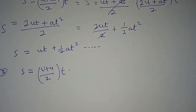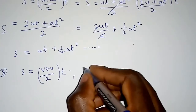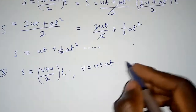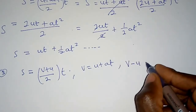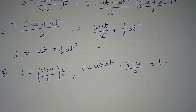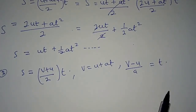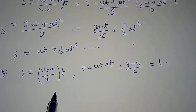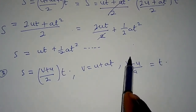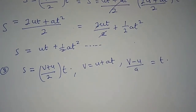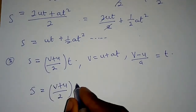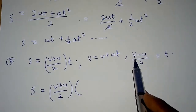From equation 1, V equals U plus AT. Making T the subject: send U to the other side to get V minus U equals AT, so T equals V minus U over A. We now substitute this expression for T into equation 2, replacing T with V minus U over A.